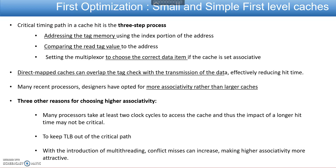There are 3 reasons where higher associativity is still chosen. First, most processors take a minimum of 2 and a maximum of 4 clock cycles to access a cache, which has no impact on a longer hit time. Second, to keep the translation look-aside buffer out of the critical path and avoid address translations — addressed in the basic 6 optimization techniques. Third, with the introduction of multithreading there is a possibility of increased conflict misses, and in such scenarios higher associativity is more attractive.